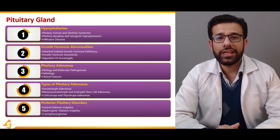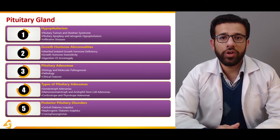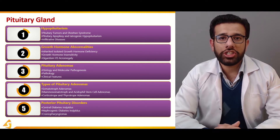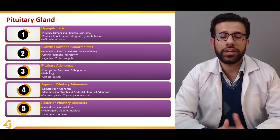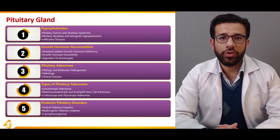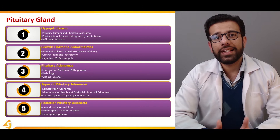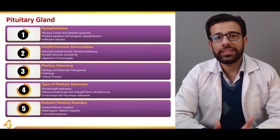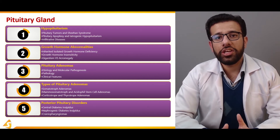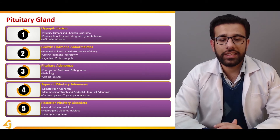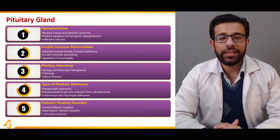The second section is related to growth hormone abnormalities — its diagnosis and the clinical presentation of growth hormone deficiency, that is, how the patient presents with growth hormone deficiency, as well as growth hormone excess, and what symptoms occur when an excessive amount of growth hormone is produced by the anterior pituitary.